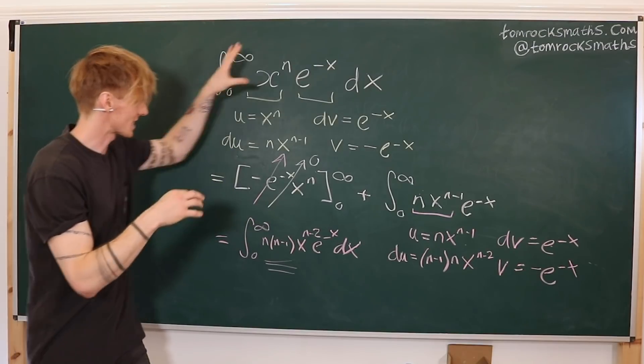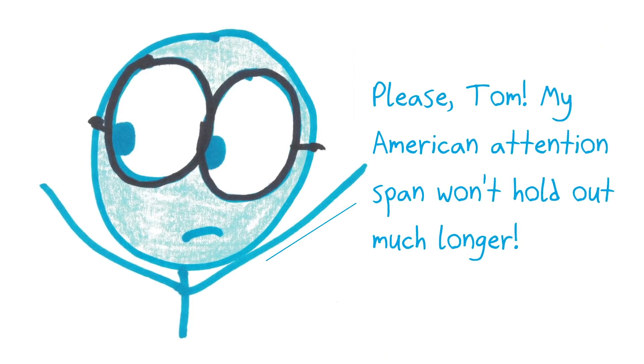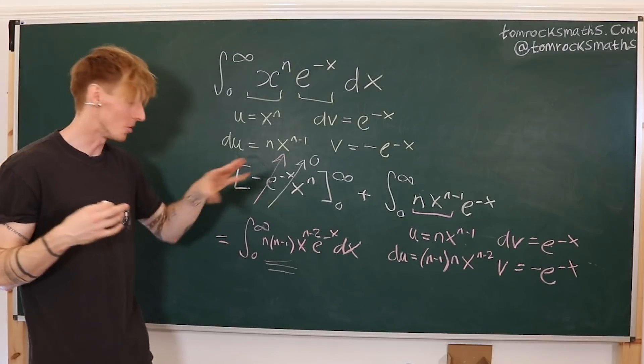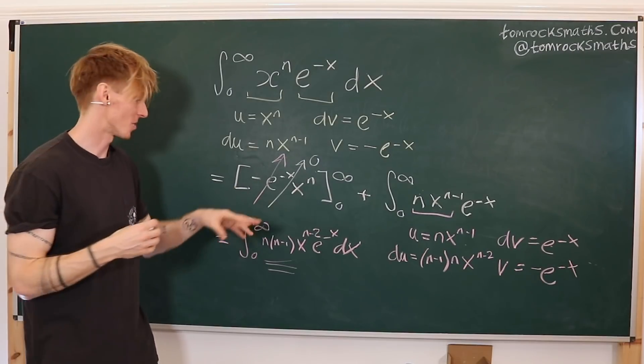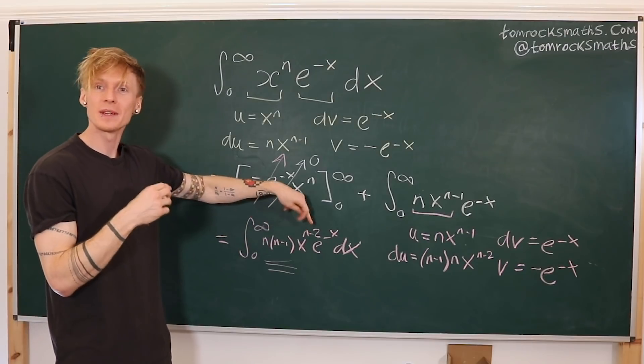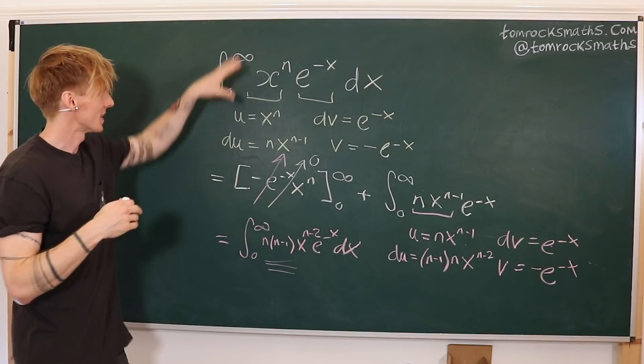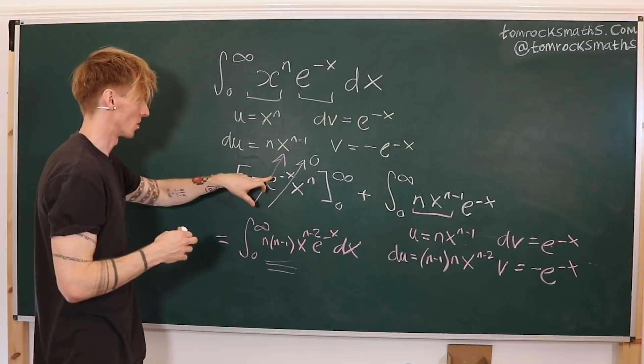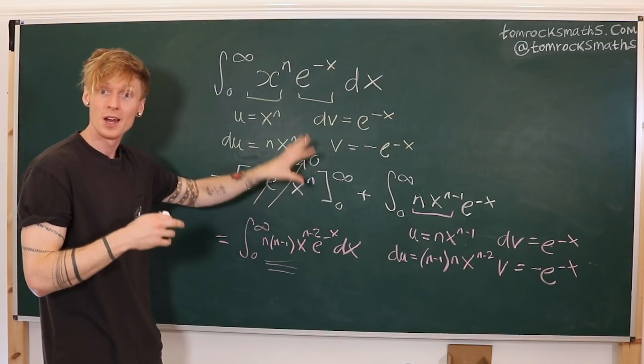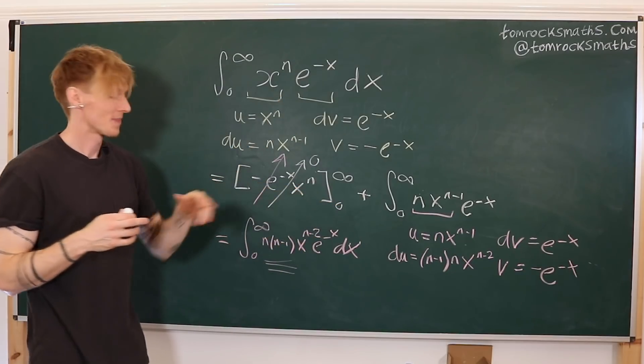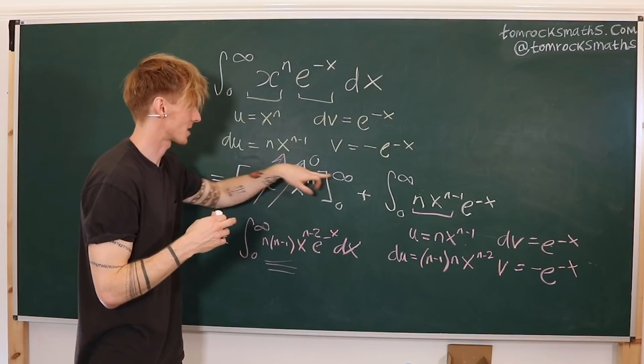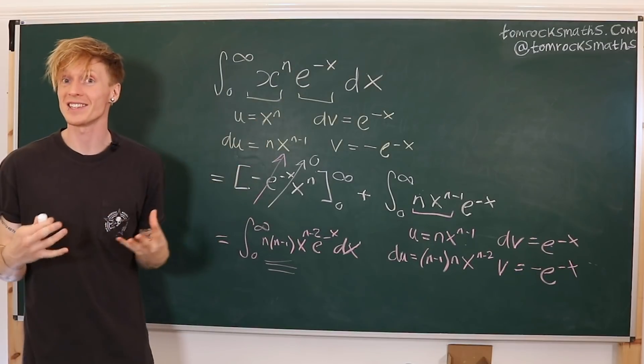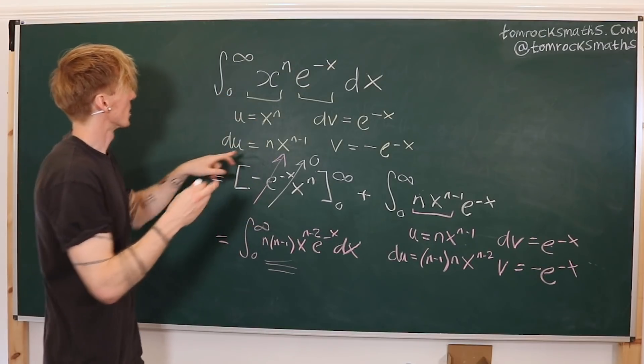Now we could carry on and repeat the exact same process, doing another set of integration by parts, and continue on basically until this goes all the way to 0. Or we can try and spot the pattern. So what's happening here is that each time we differentiate the x to reduce its power, in each step of integration by parts, the boundary terms will always vanish, because you'll always have a power of x, positive power of x, which goes to 0 at x equals 0, and the exponential to the minus x, which goes to 0 as x goes to infinity.